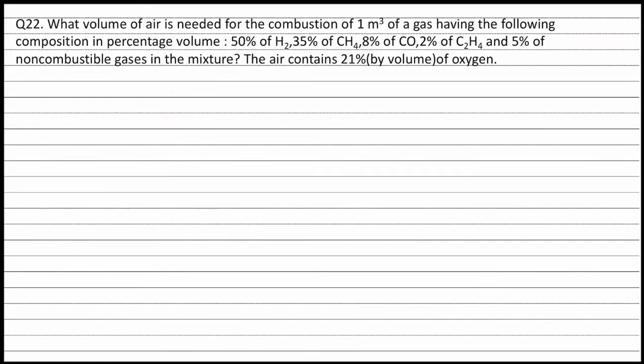Question 22. What volume of air is needed for the combustion of 1 meter cube of a gas having the following composition in percentage volume? 50% of hydrogen, 35% of CH4, 8% of carbon monoxide, 2% of C2H4, and 5% of non-combustible gases in the mixture. The air contains 21% by volume of oxygen.